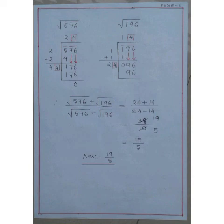Therefore, root over 576 plus root over 196 divided by root over 576 minus root over 196 equal to 24 plus 14 divided by 24 minus 14. So, 24 plus 14 is equal to 38.